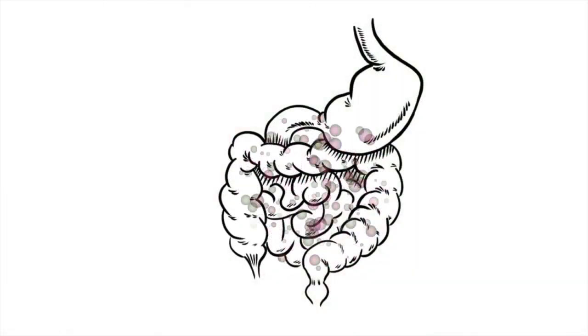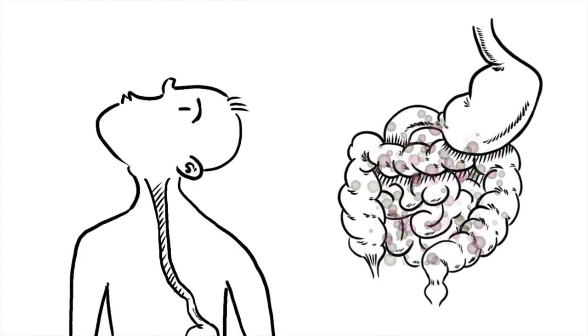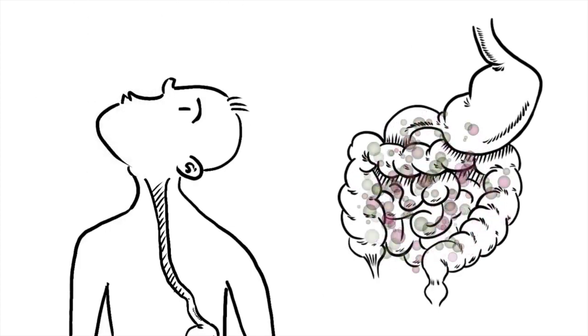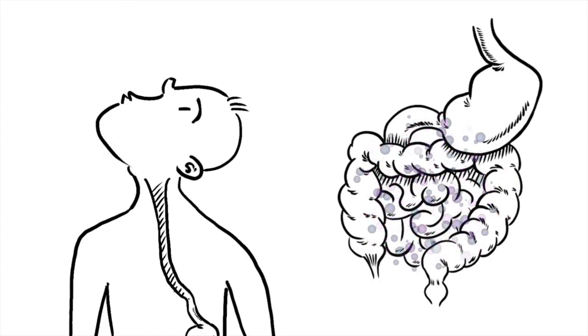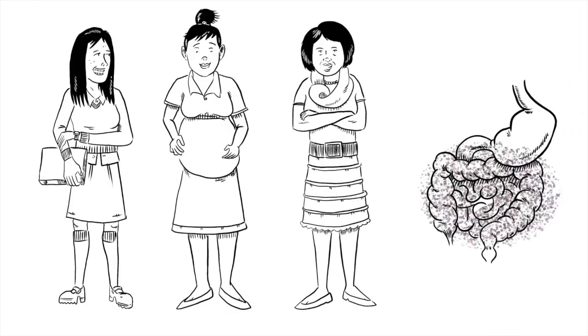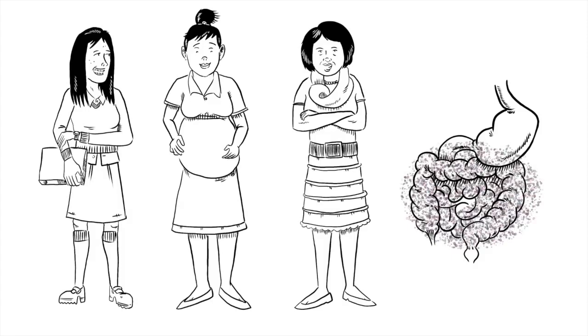As adults, changes to our microbiota are likely to be small, but major shifts in composition can occur when we radically change our diet or take antibiotics, which kill bacteria. Significant life stages such as puberty, pregnancy and menopause also cause large changes to our microbiome.